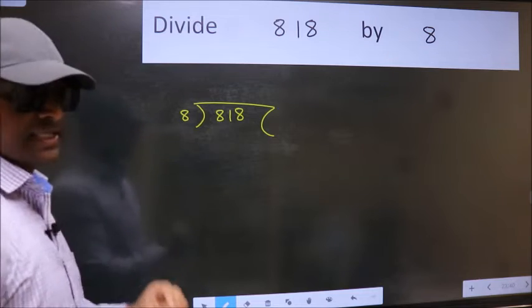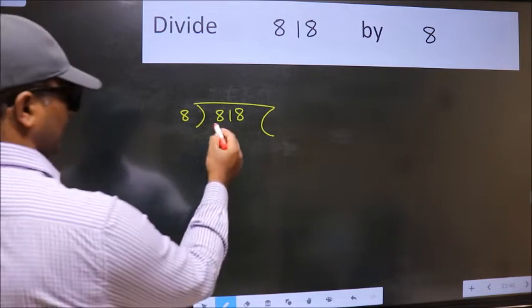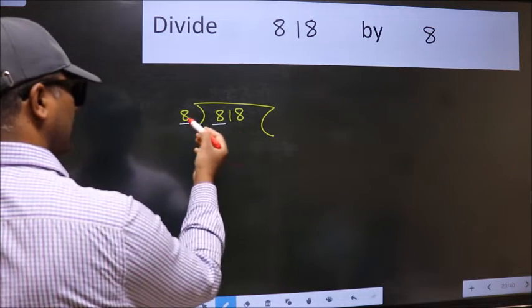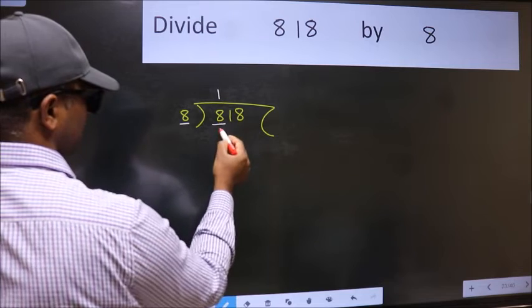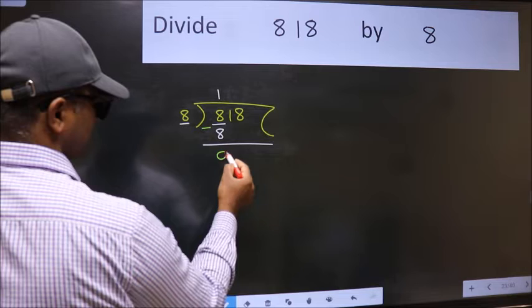This is your step 1. Next, here we have 8 and here 8. When do we get 8 in 8 table? 8 once 8. Now, we should subtract. We get 0.